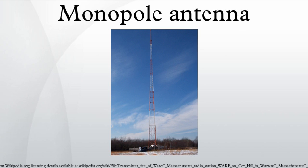The monopole antenna was invented in 1895 by radio pioneer Guglielmo Marconi; for this reason it is sometimes called a Marconi antenna. Common types of monopole antenna are the whip, rubber duckie, helical, random wire, umbrella, inverted L and T antenna, inverted F, mast radiator, and ground plane antennas.